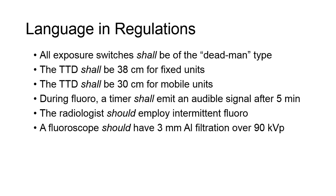The x-ray tube to tabletop distance shall not be less than 38 cm for a fixed radiographic unit. The TTD shall not be less than 30 cm for a mobile unit. The collimators are built large enough so that it would be impossible for the x-ray tube to be brought close to the patient. If the collimator housing is too small, you may notice metal rails or plastic cylinders attached to it, making it impossible to bring the tube in closer than these restrictions allow.